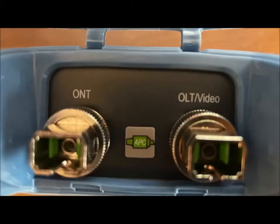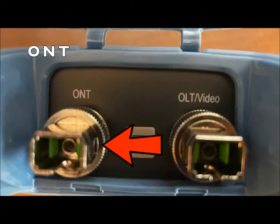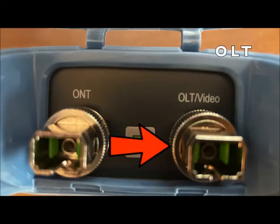Before operation, the ONT and OLT ends should both be connected to the meter. The ONT connection is on the left and the OLT is on the right under the protective cap on the top of the meter.